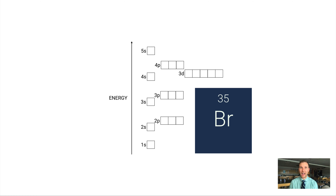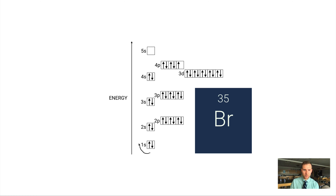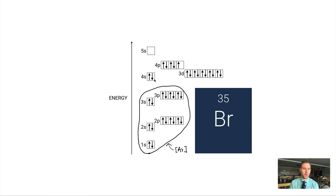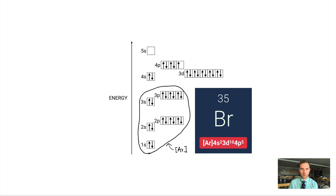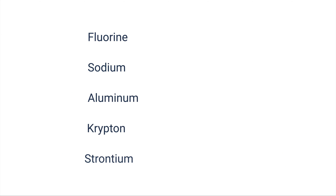Let's do bromine — 35 electrons. Filling in order: 1s² 2s² 2p⁶ 3s² 3p⁶ 4s² 3d¹⁰ 4p⁵. The portion 1s² 2s² 2p⁶ 3s² 3p⁶ is argon, so we write it as [Ar] 4s² 3d¹⁰ 4p⁵. This noble gas shorthand is especially useful beyond neon — you probably wouldn't bother for helium since that's just 1s².